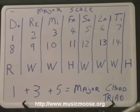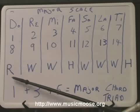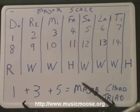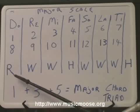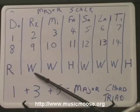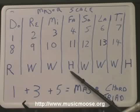Okay, now let's look at the construction of a major scale. You'll notice here I've got these series of letters. Now that R represents the root, and the W represents a whole step, and the H represents a half step.